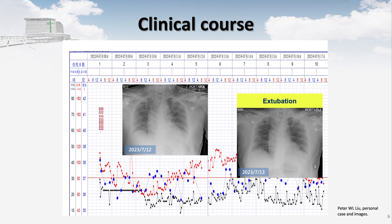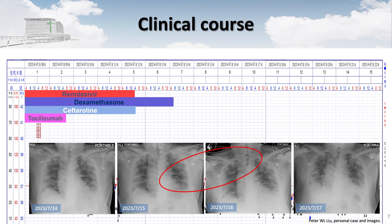The patient gradually improved after standard-of-care treatment and was extubated after one week. However, when we tried to transfer the patient to the general ward, a low-grade fever and tachycardia — signs of infection — occurred. A series of chest X-rays showed bilateral infiltration of the peripheral areas of the lung.